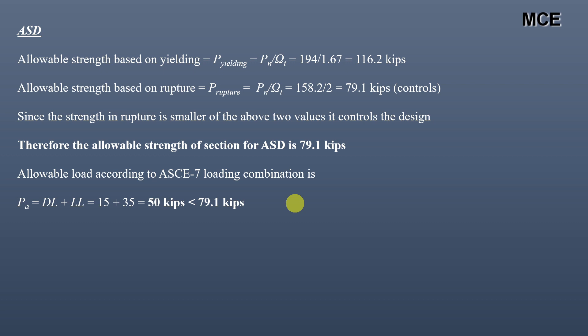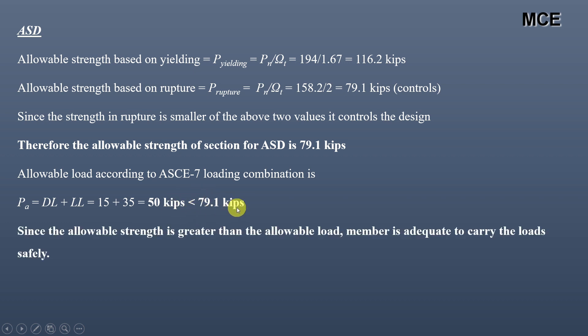The allowable load per ASCE 7 = dead load + live load = 15 + 35 = 50 kips. Since 50 kips is less than the allowable strength of 79.1 kips, this member is adequate to carry the loads safely.